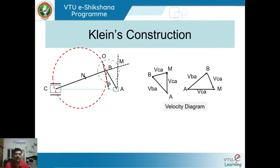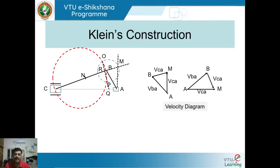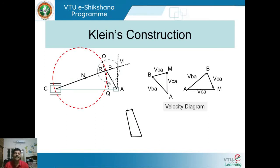Draw a line from O to P and extend it to the AC line. This newly drawn line cuts the connecting rod at R and touches line AC at Q. If you observe closely, you can see a polygon QABR. Reconstruct it: line RQ, line QA, line AB, and line BR. This polygon gives you the acceleration diagram.